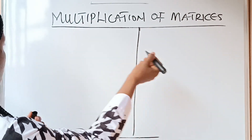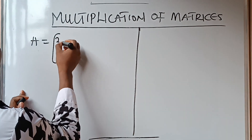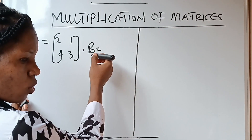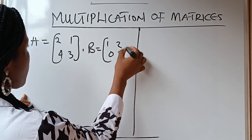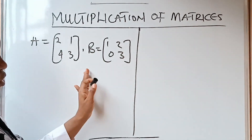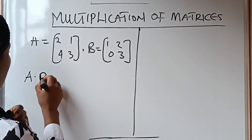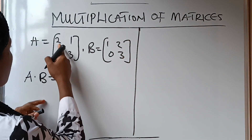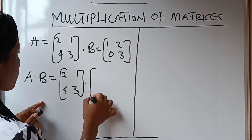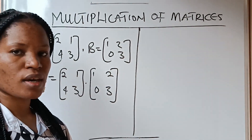We are told that A equals [2, 1; 4, 3] and B equals [1, 2; 0, 3], and we are asked to multiply them together. So A·B equals [2, 1; 4, 3] dot [1, 2; 0, 3]. As usual, we are going to open our brackets. This first row will multiply the first column, and this row will also multiply the second column. If it goes into the first column, it's going to form a number; if it goes into the second column, it's going to form the second number.